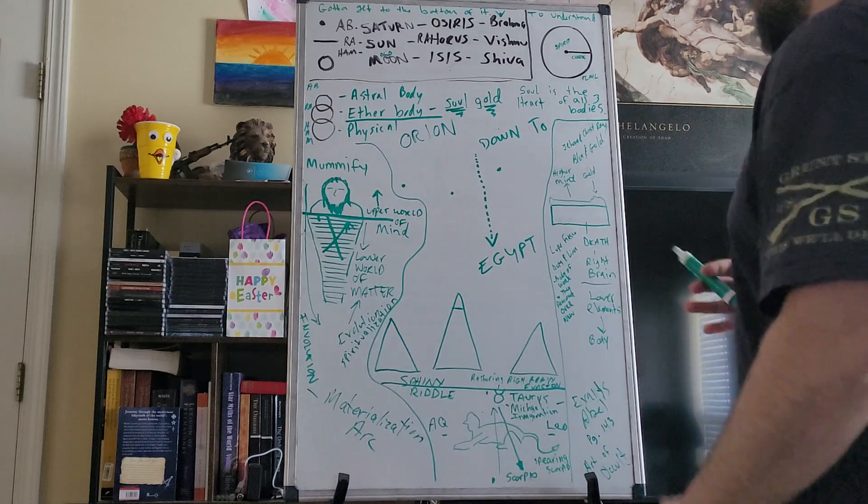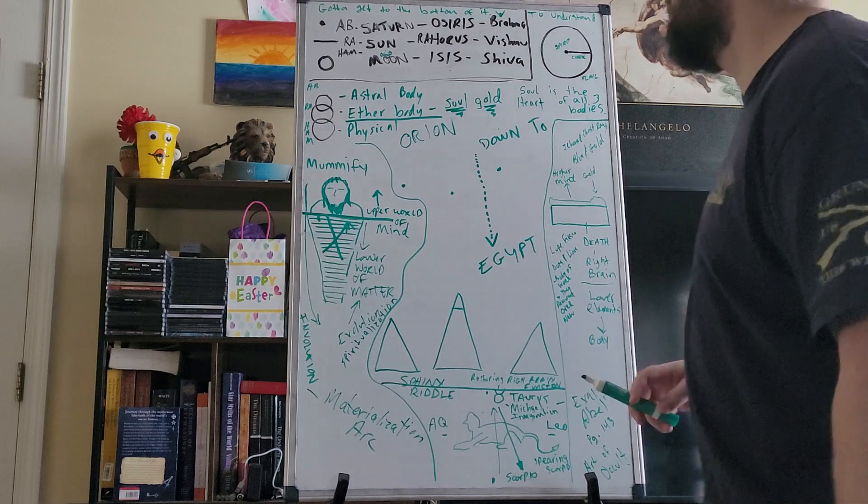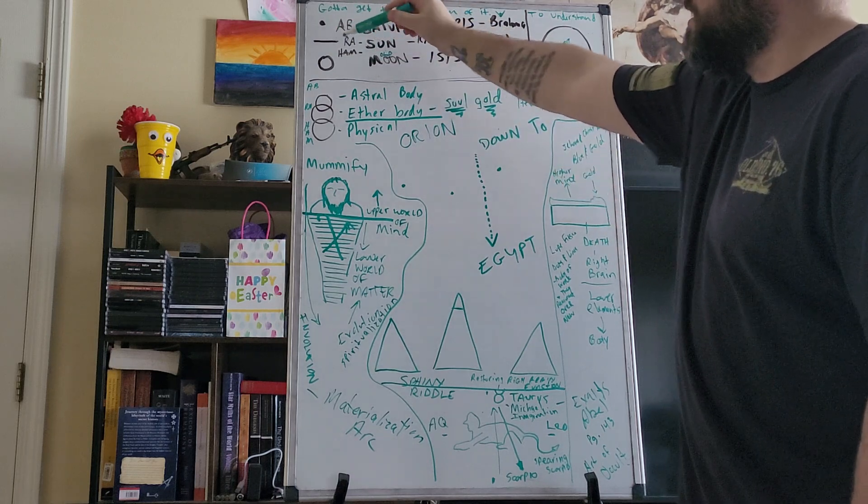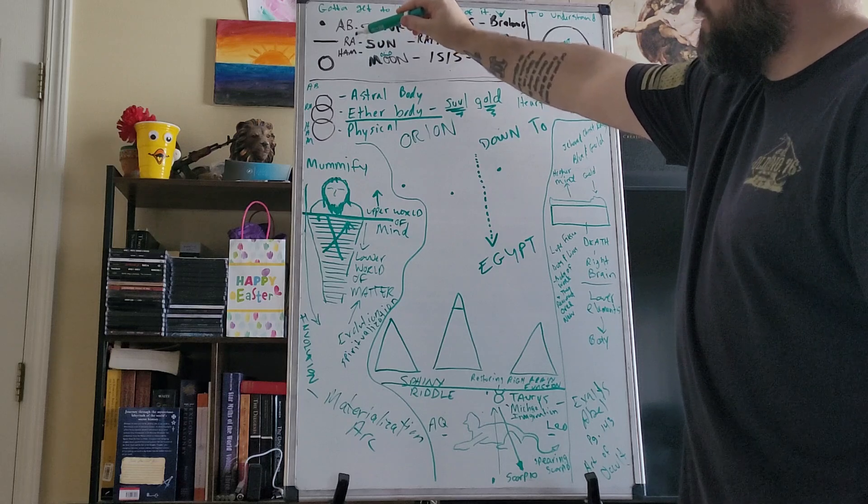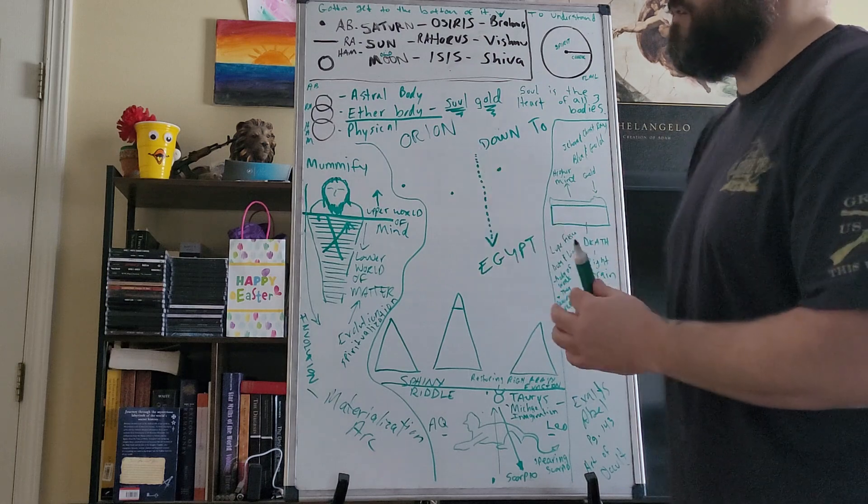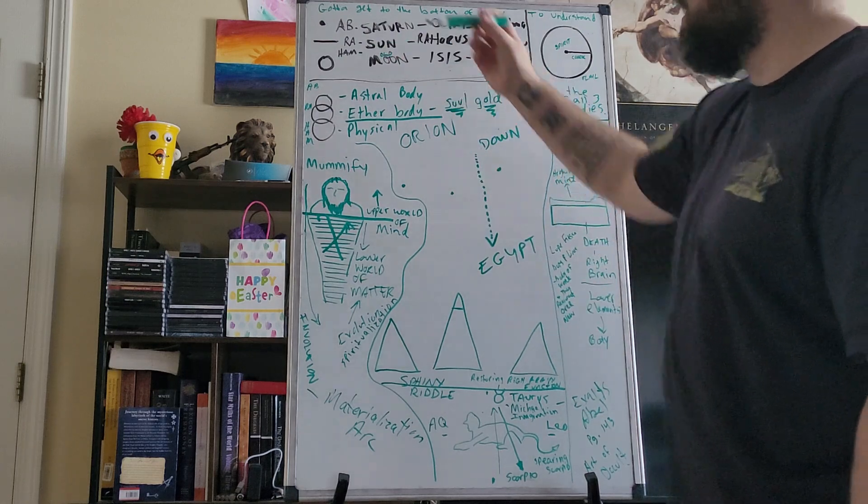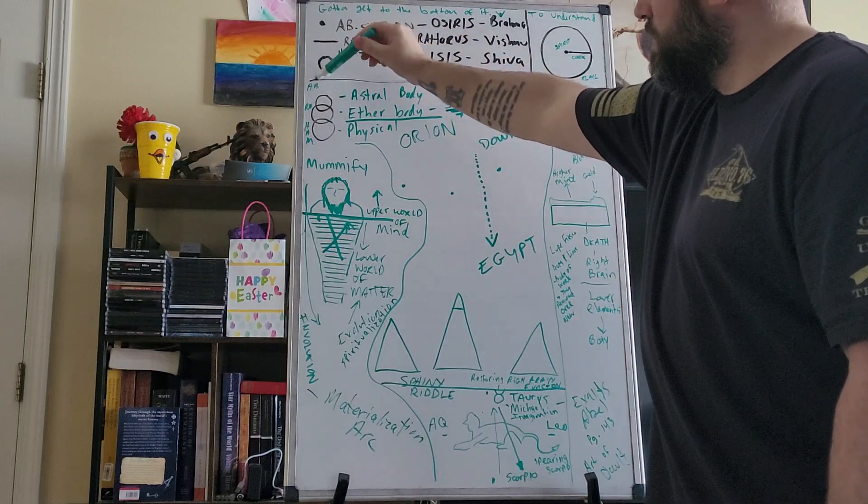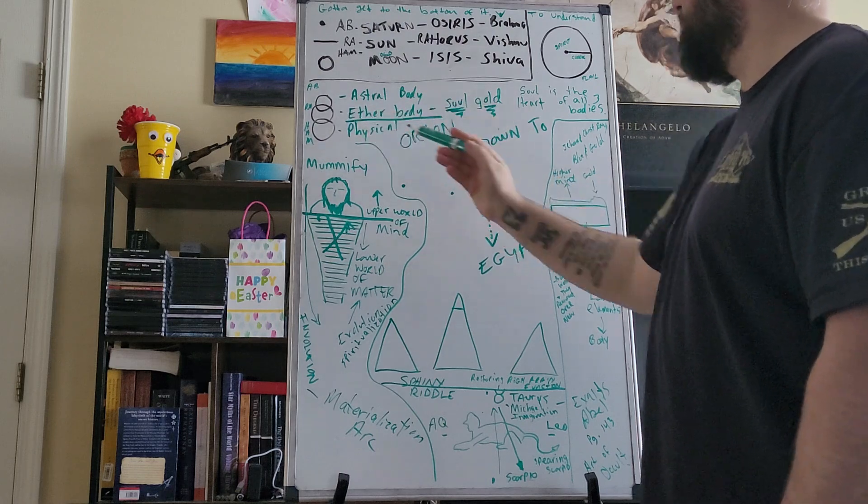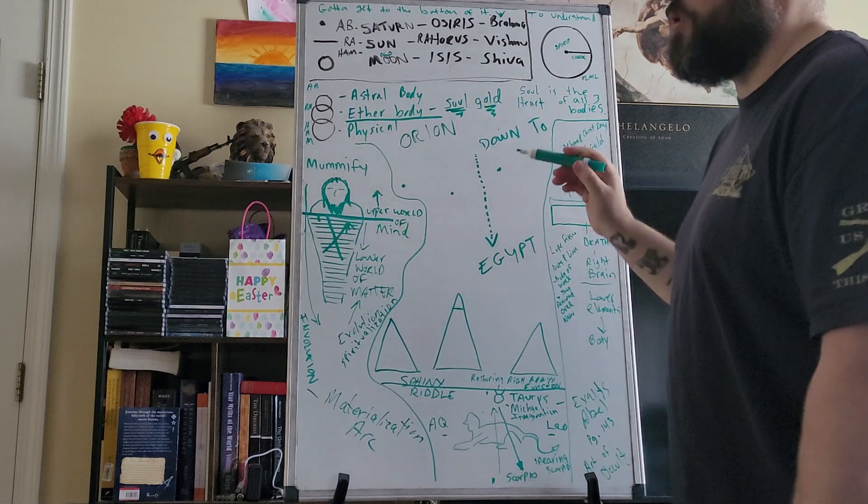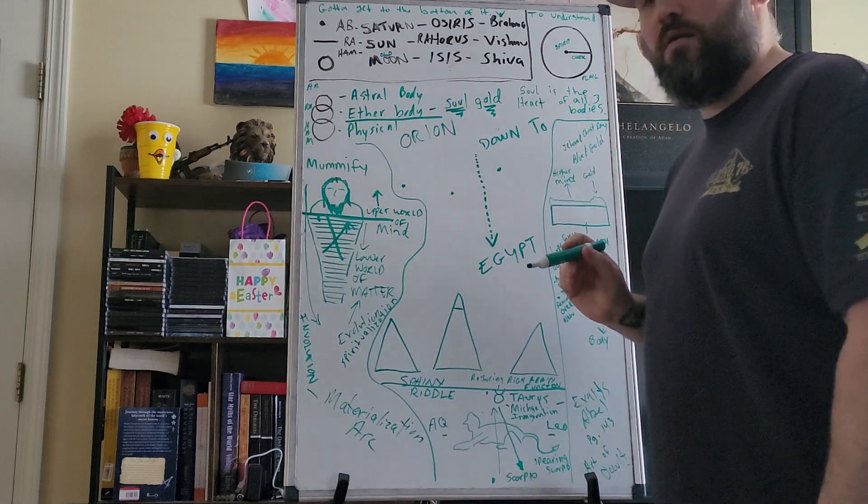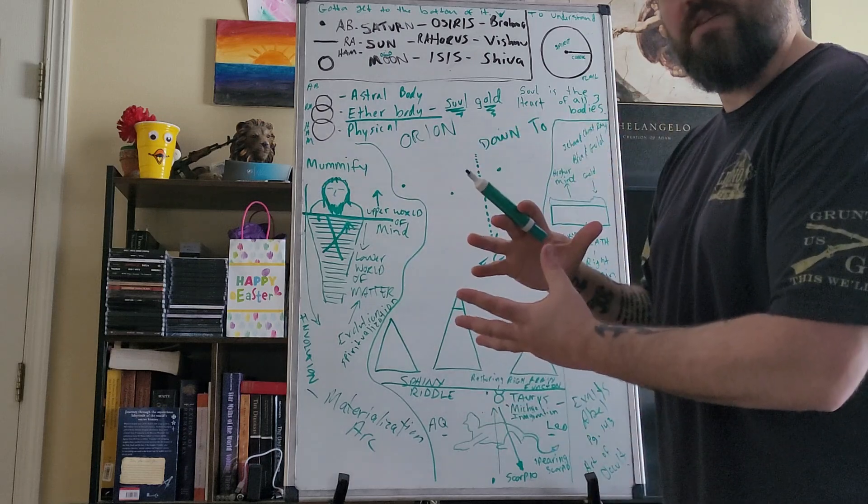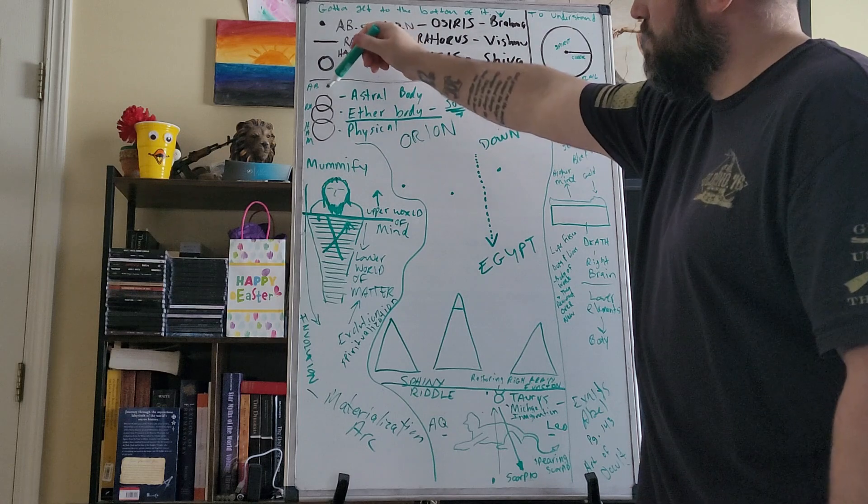So just to recap some stuff, we've got Abraham, which is the dot, the line, and the circle. The dot is pure spirit, the line is spirit moving away from itself in action, and then the circle represents the sphere of its effects or the material sphere. Another way you could say it is astral body, ether body, physical body. Your ether body is your soul, your soul is gold. This is the alchemical gold we're producing during this life. Your soul is essentially like the heart of all three bodies, it's the glue that keeps the astral body and the physical body together.